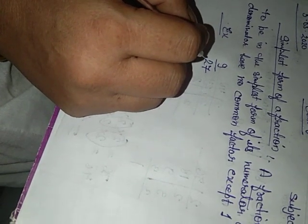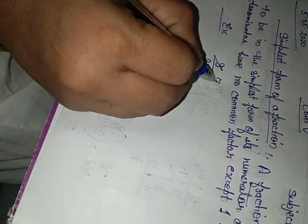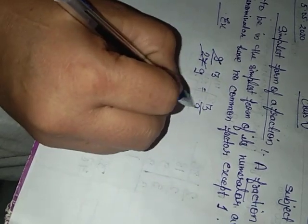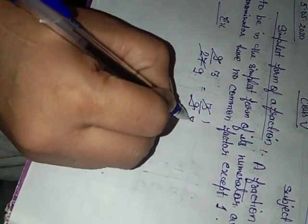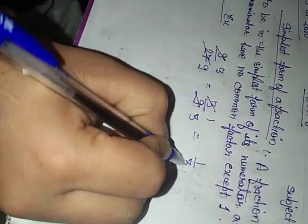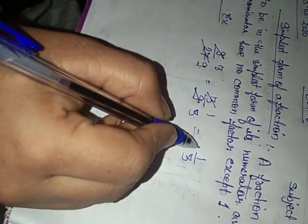First of all we will divide it. It will go by 3: 3 into 9 is 27. Again it will go by 3: 3 into 3 is 9, and 3 into 1 is 3. So 1 upon 3 is the simplest form of 9 upon 27.